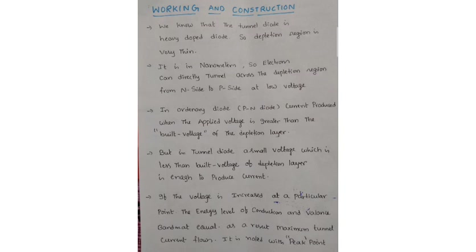They are also made from other materials such as gallium arsenide, silicon, and gallium antimony. The width of the diffusion region depends on the number of impurities added. If a large number of impurities are added, the layer is very narrow. The tunnel diode is doped a thousand times greater than the normal diode.